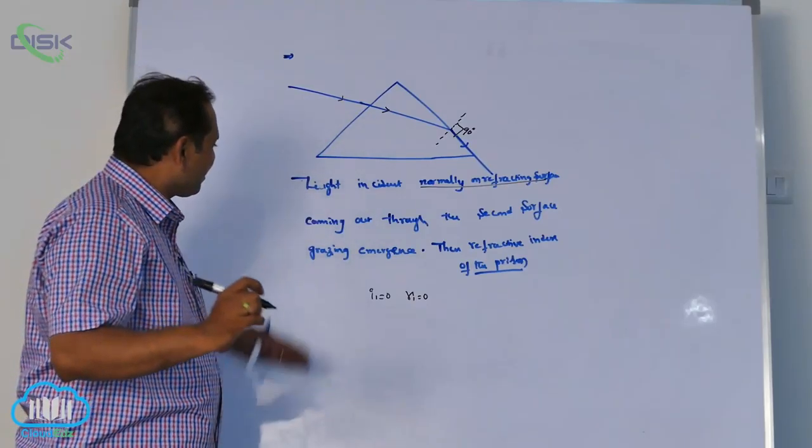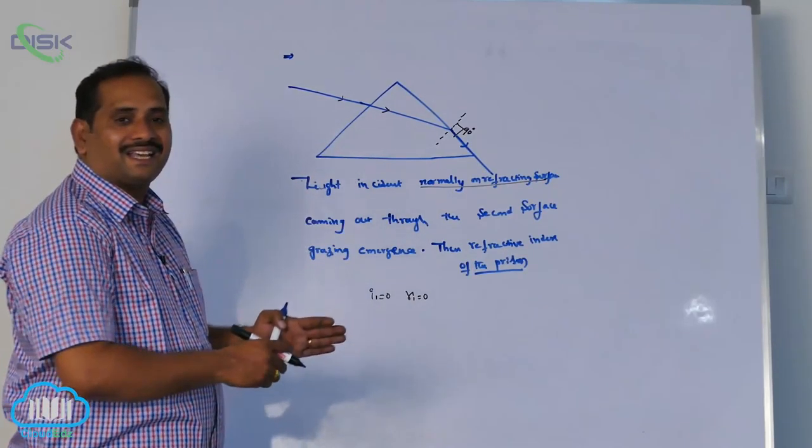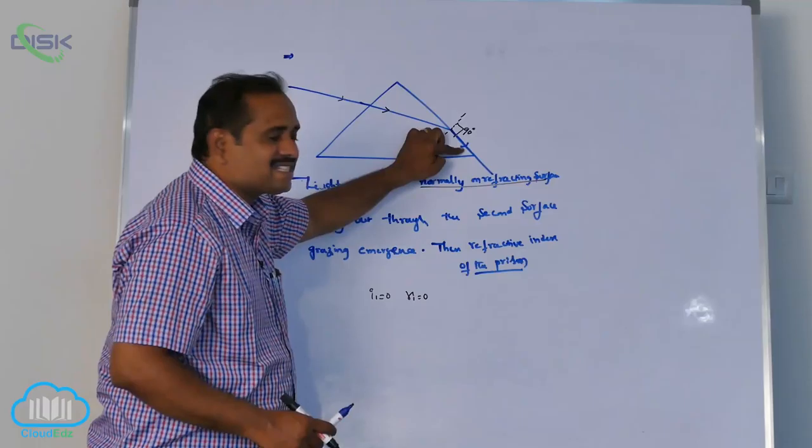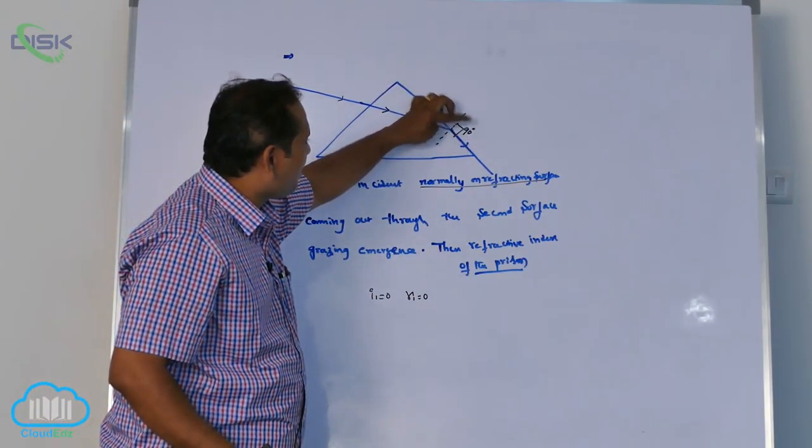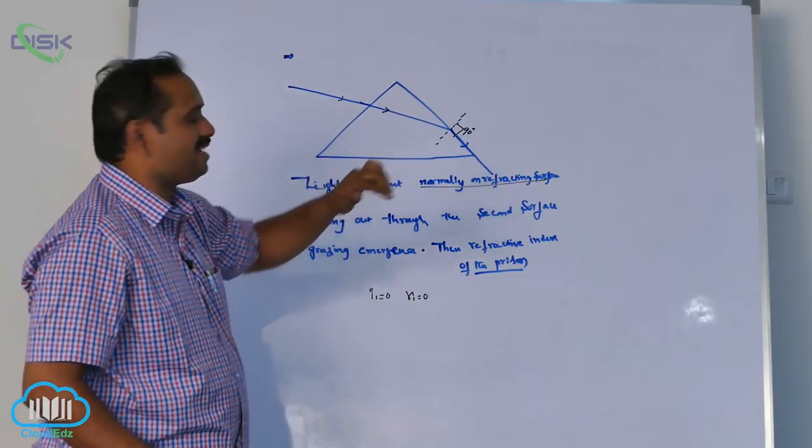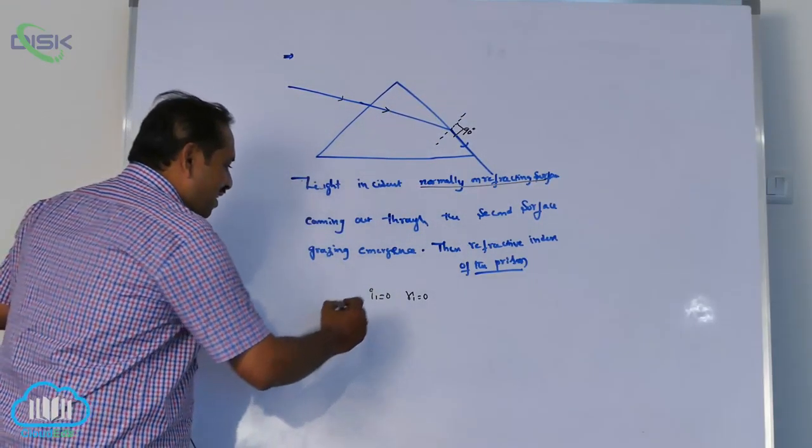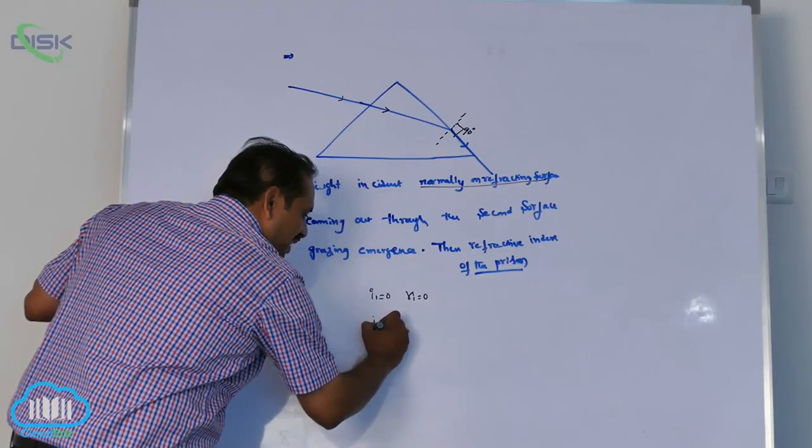Most of the people are confused with this grazing, sir. Grazing means they write it as zero - wrong. Your angle is measurement with normal. Normal and grazing surface is 90. Then i2 equal to 90 degrees.